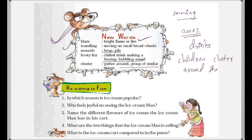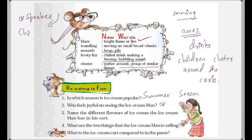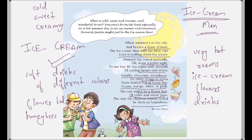Now we have some questions. In which season is ice cream popular? Summer season, because it is a cold thing to eat and people prefer it during summer. Who feels joyful on seeing the ice cream man? The speaker of the poem feels joyful while seeing the ice cream man, and says that children get very excited when they see him. Name the different flavors of ice cream in his cart — vanilla, chocolate, and strawberry.